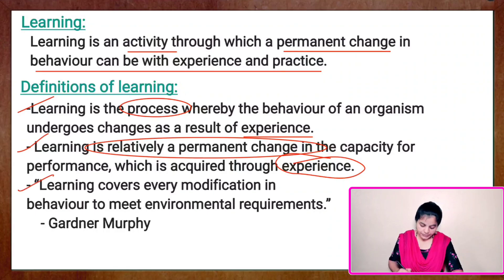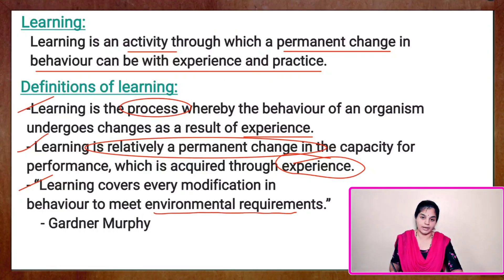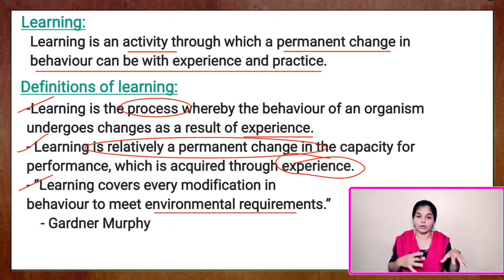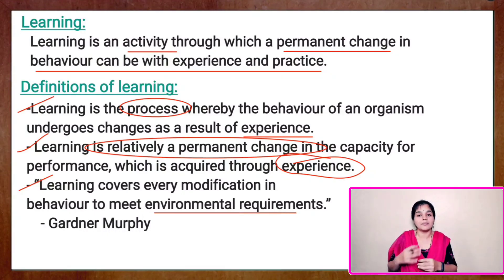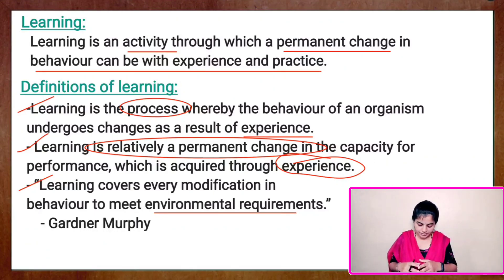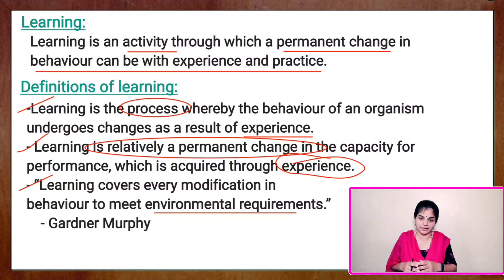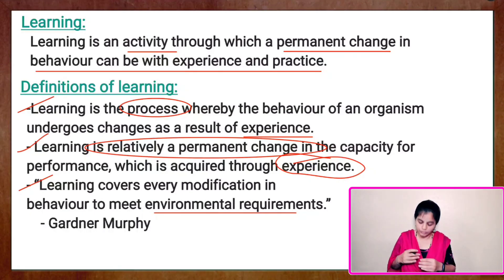According to Gardner Murphy, learning covers every modification in behavior to meet environmental requirements. Here environmental requirements means the needs of society — what a society is expecting from a person — or it might be his personal needs. So in order to achieve those environmental requirements, he is undergoing modifications with respect to behavior. Learning covers every modification in behavior to meet environmental requirements.